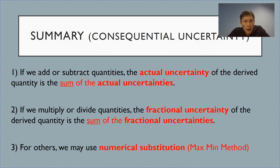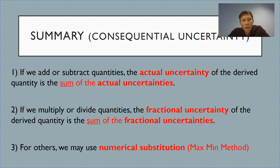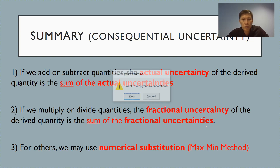Quick summary: for expressions involving addition or subtraction, we simply add up the actual uncertainties. For expressions involving multiplication and division, the final fractional uncertainty is given by the summation of the individual fractional uncertainties. Lastly, in some cases we employ the method of numerical substitution to calculate the final uncertainty. In the next video, I will show worked examples from page 11.